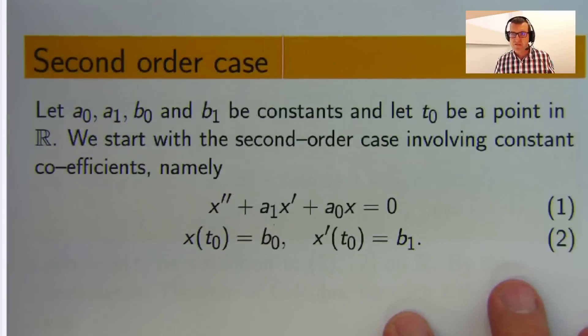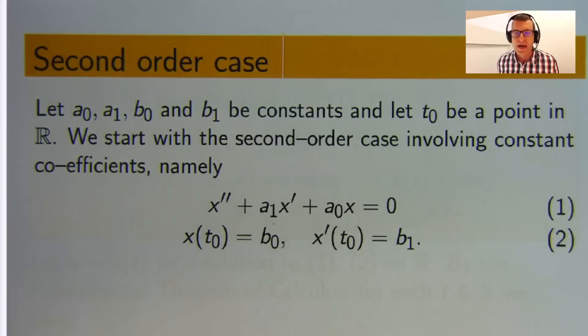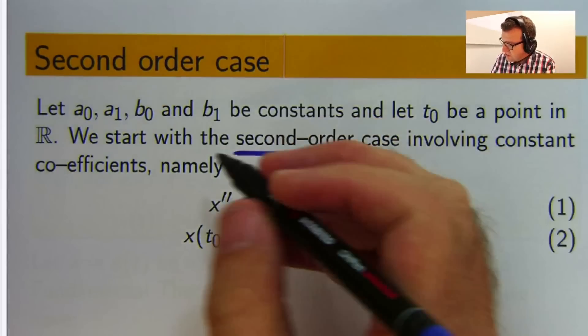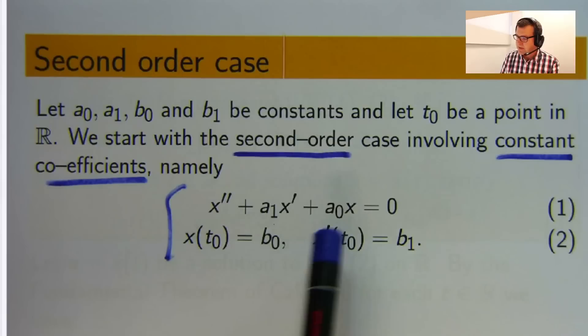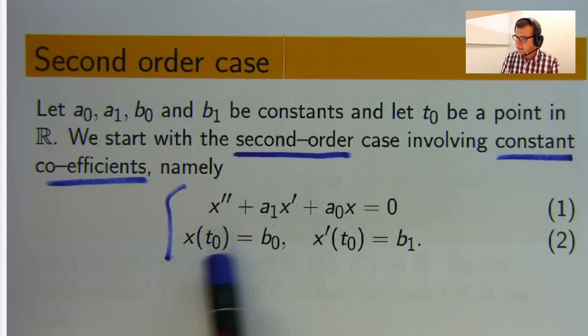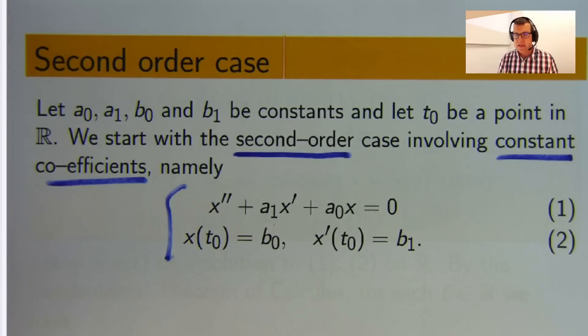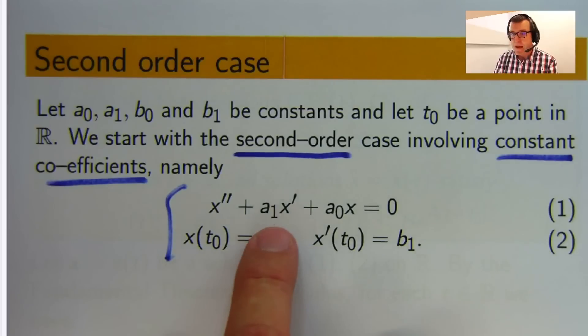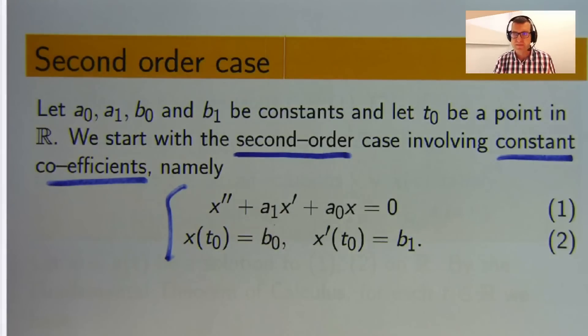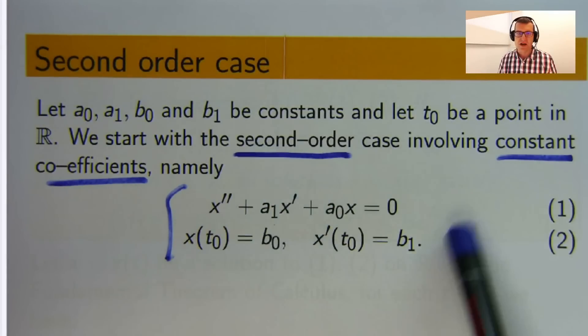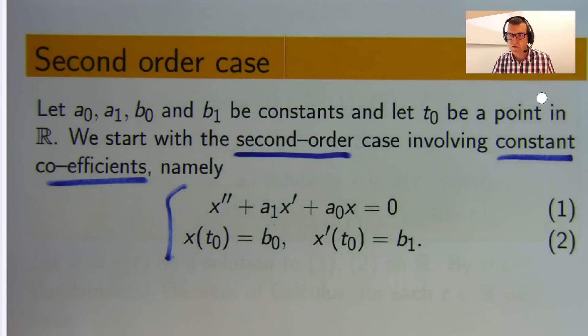This is very basic. If you want the more general nth order problem, you can go to the paper and find it. So here I've just concentrated on the basic second order case with constant coefficients. So here, a0, a1 are constants, b0 and b1 are constants, and t0 is some real number. Now in the paper, a1 and a0 could be functions, and it could be third order, fourth order, fifth order, nth order, that sort of stuff. But just for simplicity, this is the equation we're going to restrict our attention to.